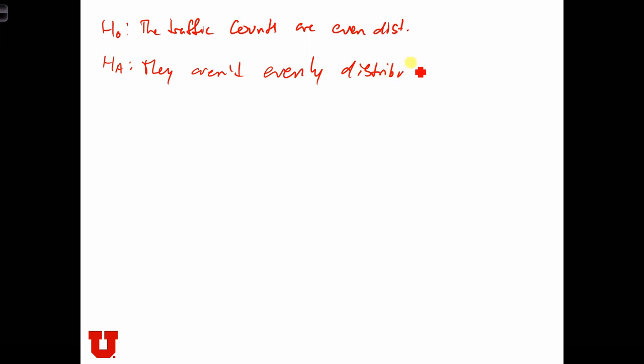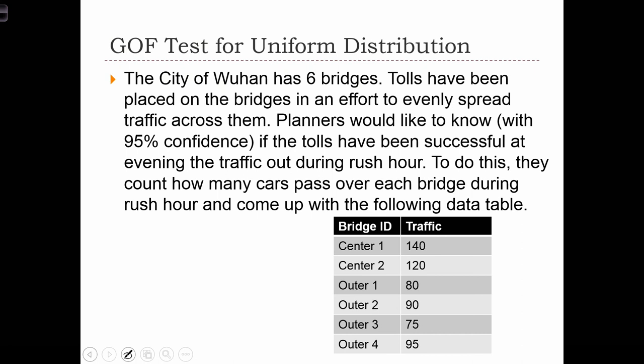Now, a lot of you will be looking at this data table and asking, well, I can see that they're not evenly distributed. So why are we doing this test? We see that this bridge has 140, this one doesn't have 140. And therefore, by definition, they're not even. But what I think you need to recognize is that these counts are a sample of cars that are passing over the bridges. And therefore, just because the samples are slightly different doesn't mean that the population traffic counts are actually different from one bridge to the next.